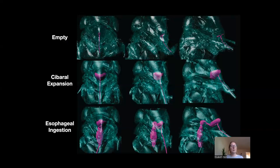We were able to capture the structure of the food canal in different stages of feeding using this technique. In the first row, you can see the cybarium is empty; in the middle, it's full; and at the bottom, it's relaxing, pushing fluid through the esophagus and into the rest of the digestive tract.